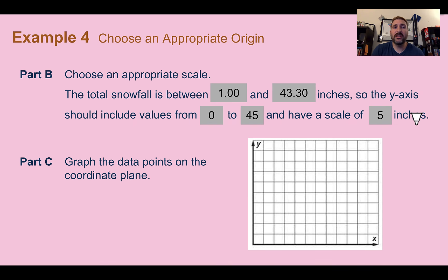Part C, graphing the data on the coordinate plane. So on our x-axis, those are the years since 2005, and now we can count by ones. And then going up, we have our inches of snowfall, counting by 5s.